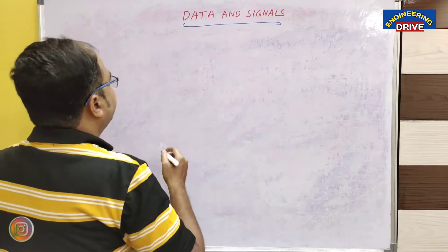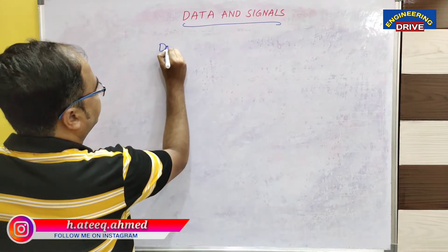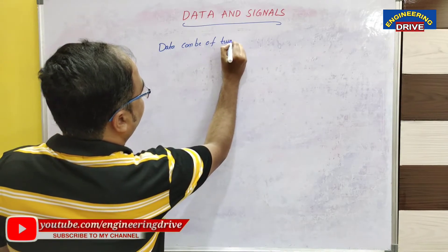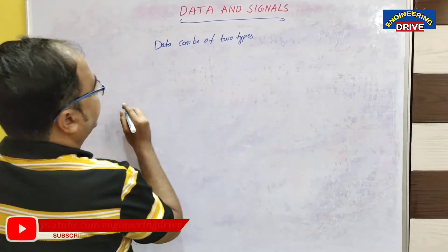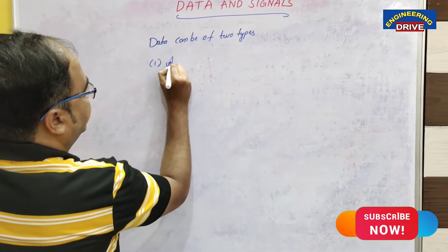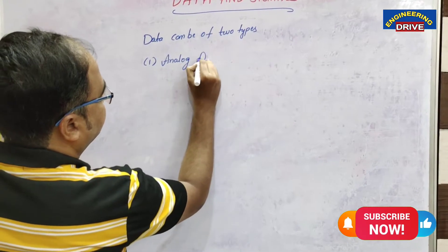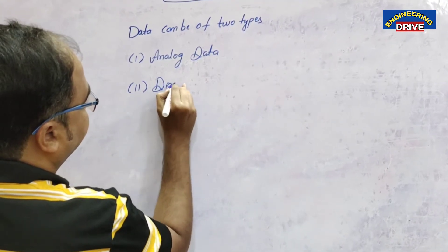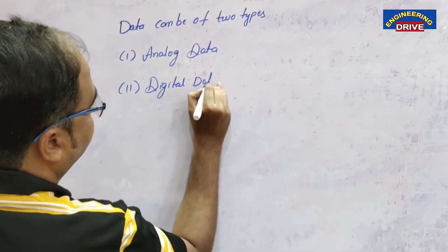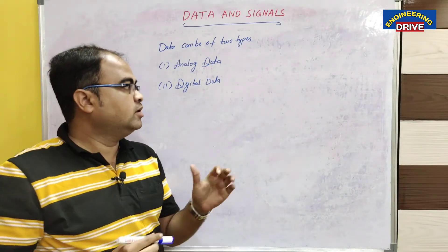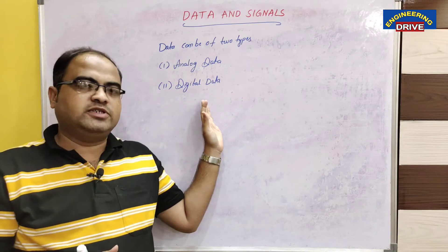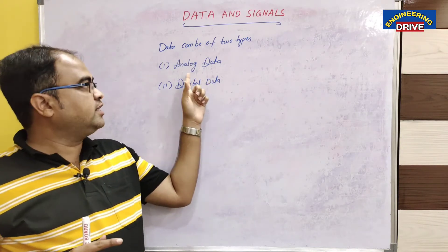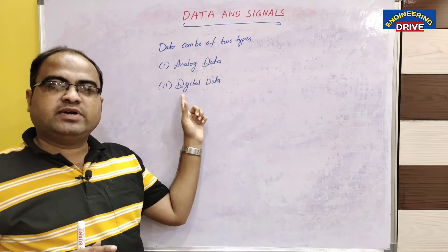Dear students, data can be of two types. One is analog data and the second type of data is digital data. When we are talking about networks, when we are talking about the physical layer and communication mechanism, we need to know that there are two types of data: analog data and digital data.